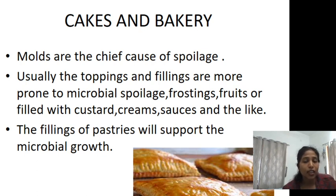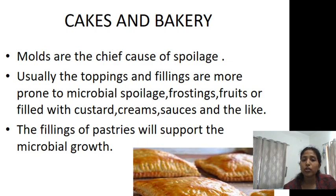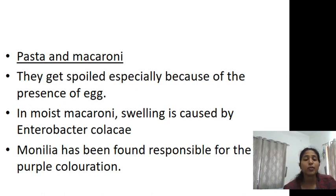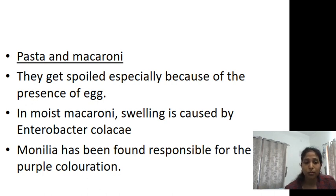Cakes and bakery products are also susceptible to spoilage; molds are the chief cause. Toppings and fillings — such as frostings, fruits, custard creams, and sauces — are more prone to microbial spoilage. Pasta and macaroni are susceptible to spoilage especially because of the presence of egg added during processing. In moist macaroni, swelling is caused by Enterobacter aerogenes, and Monilia has been found responsible for purple coloration.